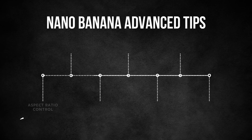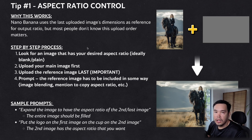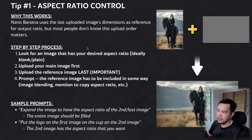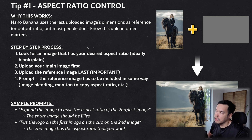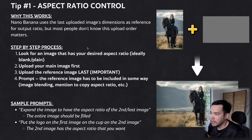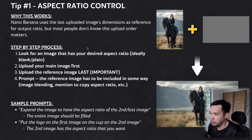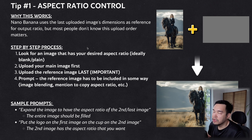Tip number 1 is controlling the aspect ratio. A lot of users complain about Nano Banana always giving them square images or just copying the aspect ratio of the image they provided, even if they specifically told it to turn the image into a 16x9 or 9x16 image.